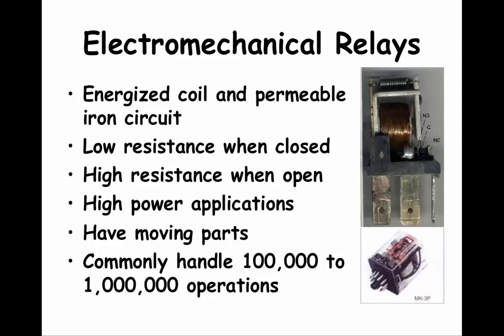When the circuit is closed, the armature moves to close the circuit. The two sides physically touch, so the resistance to electrical energy flow is very low. When the circuit is opened, the armature moves to create a gap in the circuit, and electrical power cannot flow — the resistance to flow is very high. These electromechanical relays are used for high power applications, like 10 horsepower motors. The low resistance when closed and the high resistance when opened are big advantages, but a disadvantage is that moving parts can wear out over time. Electromechanical relays can open and close in the range of 100,000 to 1 million times.